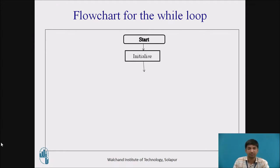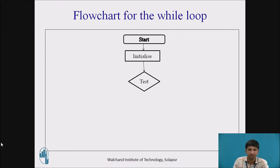Then is the test condition phase, where we check the condition — for example, from 1 to 100, whether 1 is less than 100, 2 is less than 100, repeating up to 100 is less than 100. When the condition is satisfied, the body of the loop is executed. When it becomes false — say at 101, which is greater than 100 — it goes to the false phase and the output is displayed on screen.